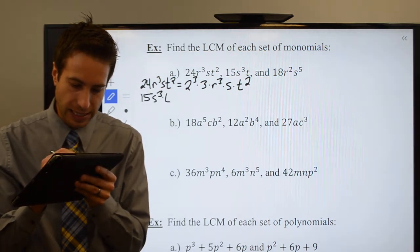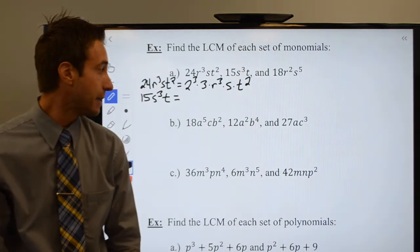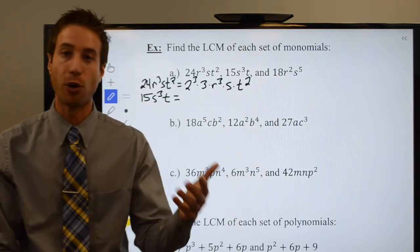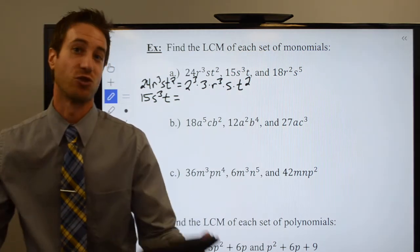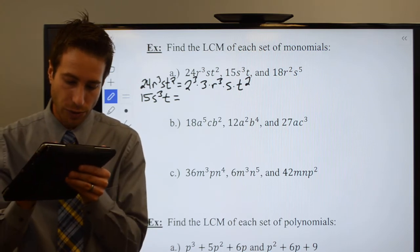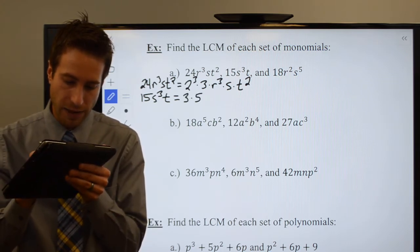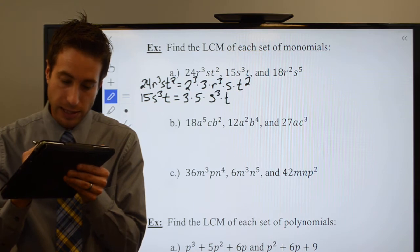15s³t. Well, 15 is easy. 15 is 3 times 5, and both 3 and 5 are prime, so there's nothing else I can do to those. So 15 is 3 times 5 times s³ times t.